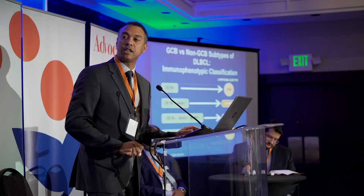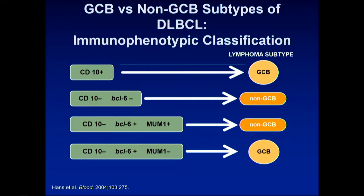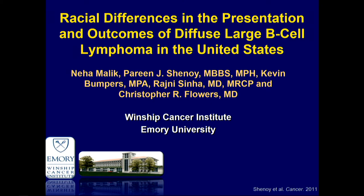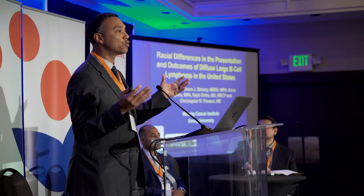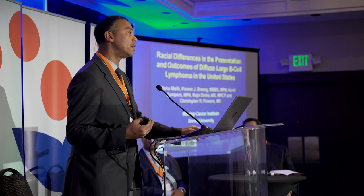These subtypes can also be defined by immunohistochemistry. This work in racial disparities and DLBCL really began as an effort not intended to focus on disparities. We were doing a simple study to understand outcomes for patients with non-Hodgkin lymphoma broadly and DLBCL specifically in the state of Georgia, looking to show that outcomes in Georgia were relatively similar to those in the United States, and that we could do clinical trials in Georgia as a microcosm for the US.